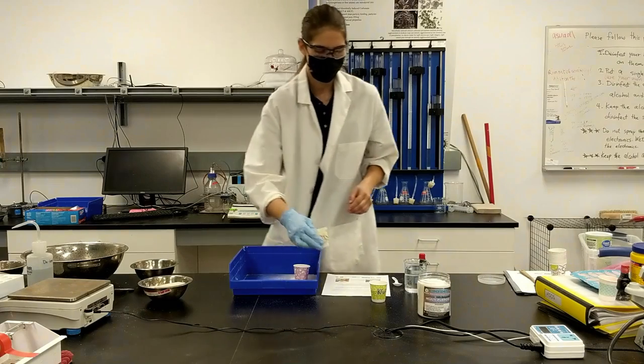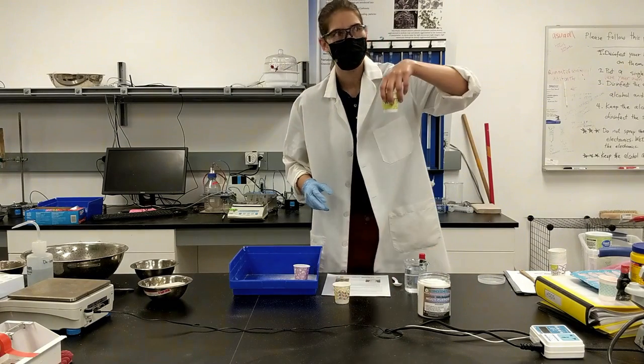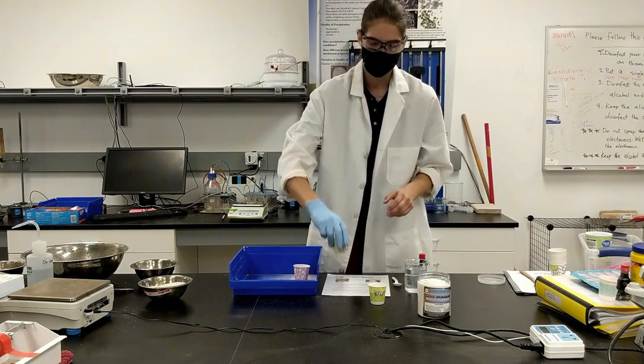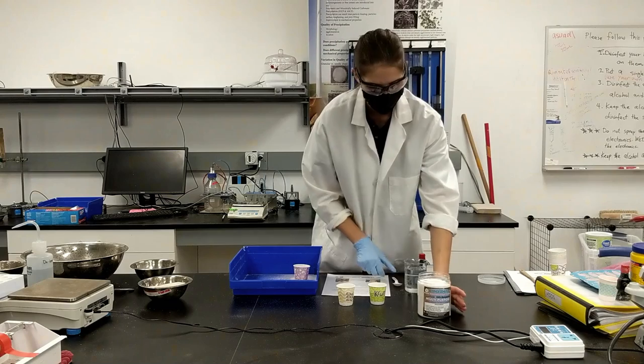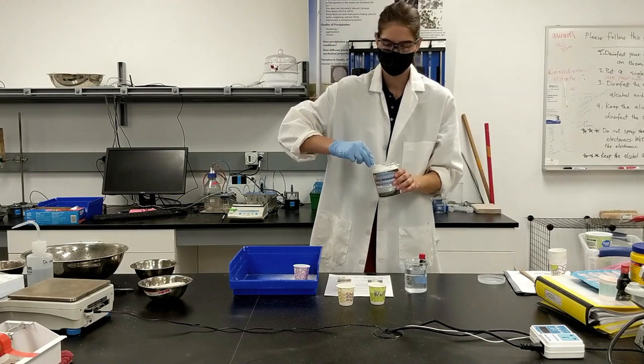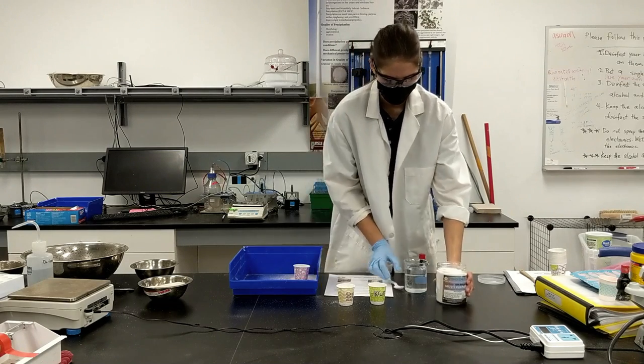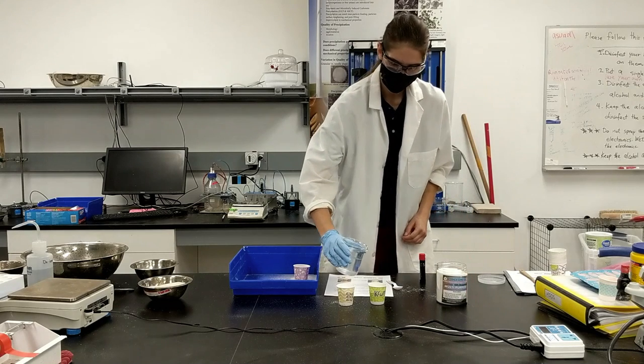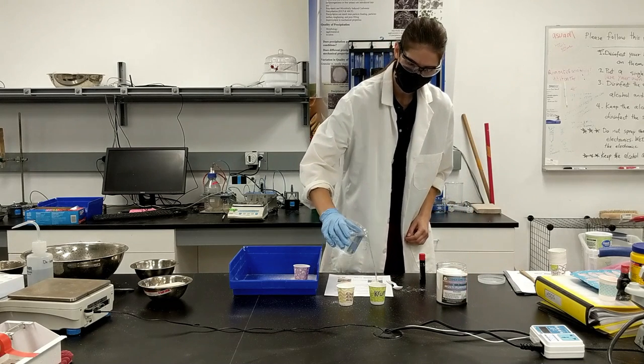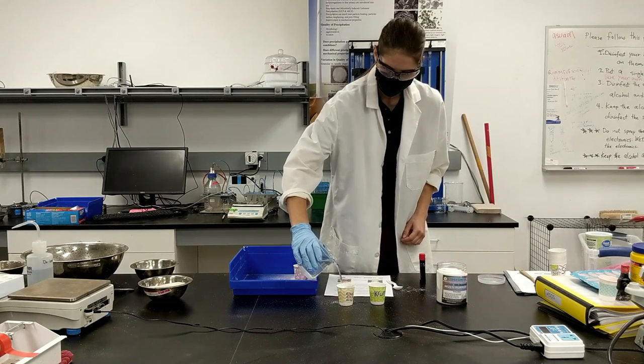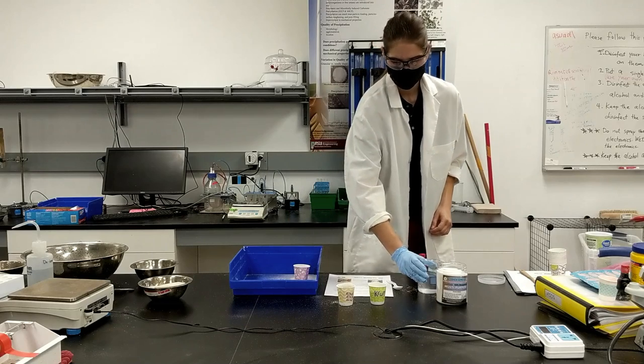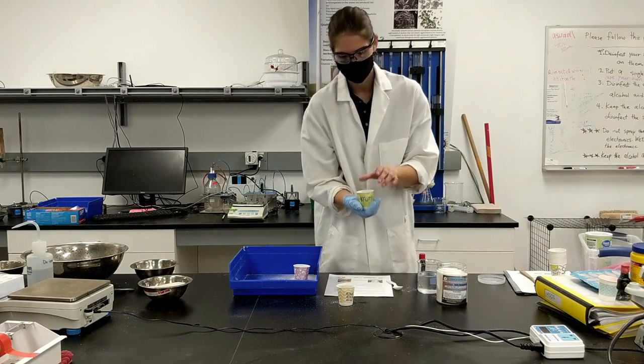And we're going to have two conditions. We're going to have a dry, untreated sand, and we're going to have one which we add our hydrogel to. Just add one scoop of hydrogel on top of the surface, and then we'll dump water on both of our samples. And then, give it 30 seconds.